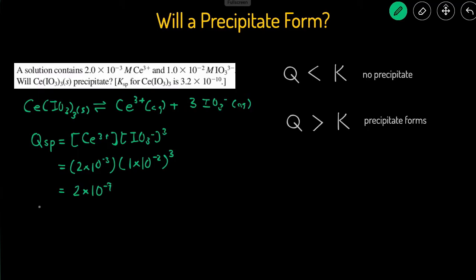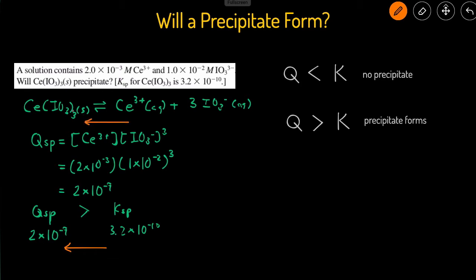Now let's compare our Qsp to our Ksp. The Qsp is 2×10⁻⁹, and the Ksp given in the problem is 3.2×10⁻¹⁰. Since negative 9 is larger than negative 10, the Qsp is greater than the Ksp. Whenever Q is greater than K, the reaction goes to the left — toward the side of the solid — so a precipitate will form.